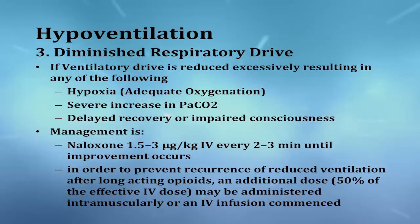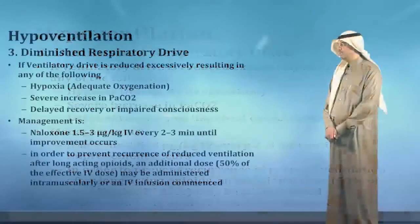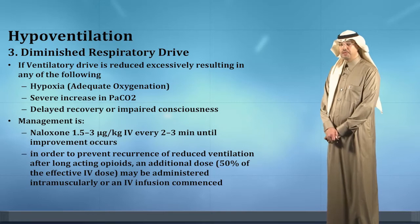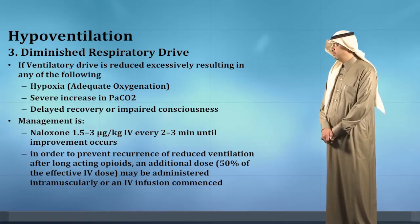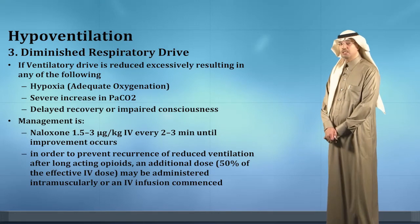If the ventilatory drive is reduced excessively, resulting in hypoxemia or hypoxia, severe increase in PaCO2, delayed recovery, or impaired consciousness, further management is needed. Naloxone can be given at 1.5 to 3 micrograms per kilogram IV, repeated every two to three minutes until improvement occurs. To prevent recurrence, it can be repeated at 50% of the effective IV dose and may be administered intramuscularly or as an IV infusion.